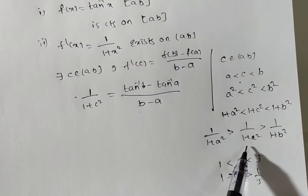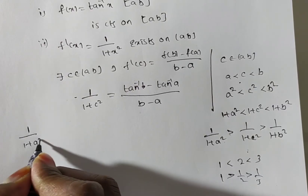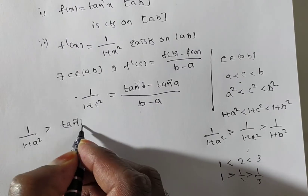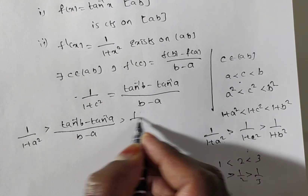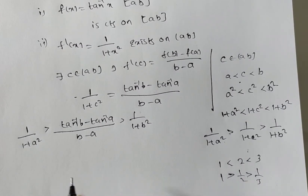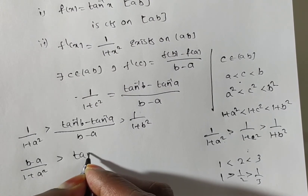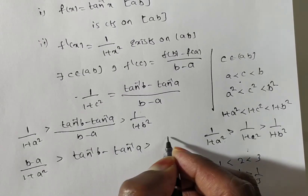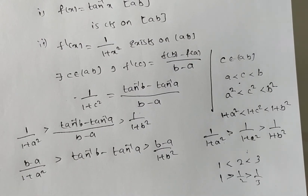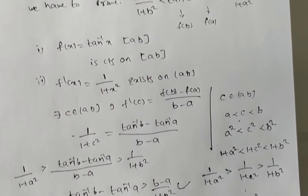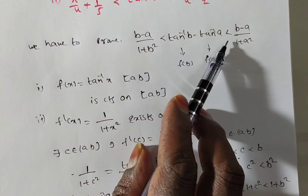Now replace 1 by (1 plus c square) with the expression from LMVT. The inequality becomes: 1 by (1 plus a square) is greater than (tan inverse b minus tan inverse a) by (b minus a), which is greater than 1 by (1 plus b square). Cross-multiplying: (b minus a) by (1 plus a square) is greater than tan inverse b minus tan inverse a, which is greater than (b minus a) by (1 plus b square).